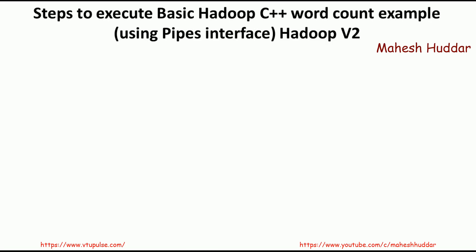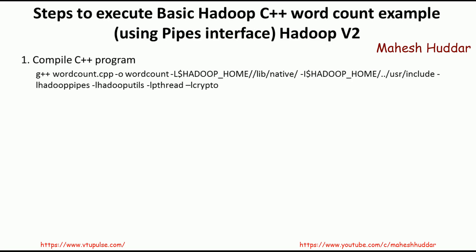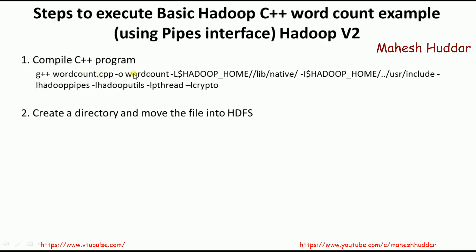Now, how to execute this program in an HDFS cluster. We need to follow 4 steps. The first step is to compile the C++ program to generate the object file using G++, with the source file wordcount.cpp and output file wordcount. We also need to include the Hadoop library path and the Pipes interface path, as well as link libraries: Hadoop pipes, Hadoop utils, pthread, and crypto.